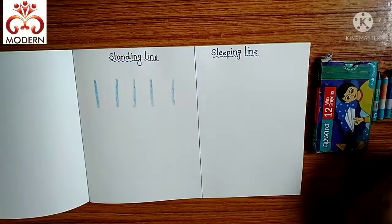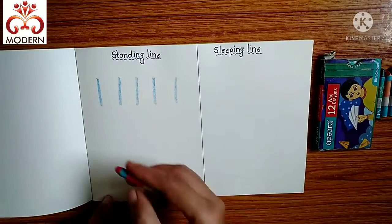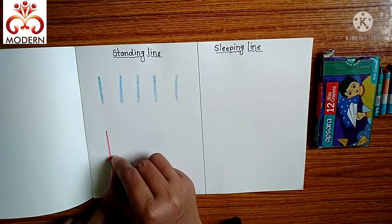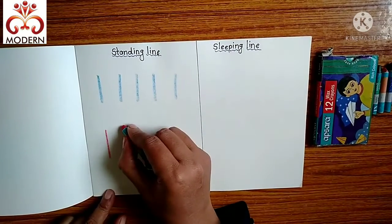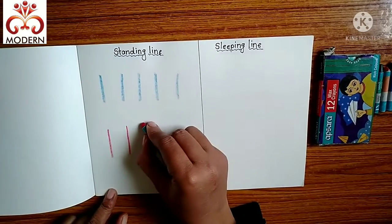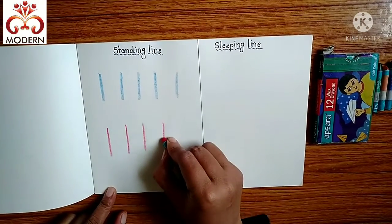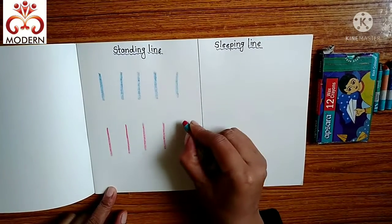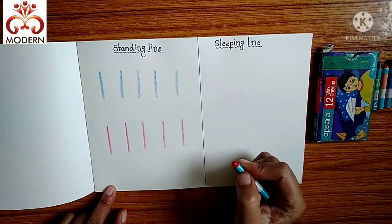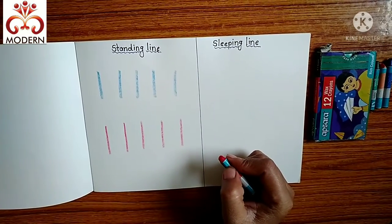I use red color now. By using colors, draw a standing line. These are standing lines.